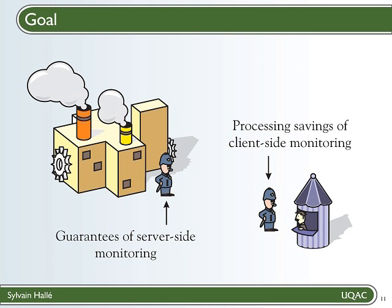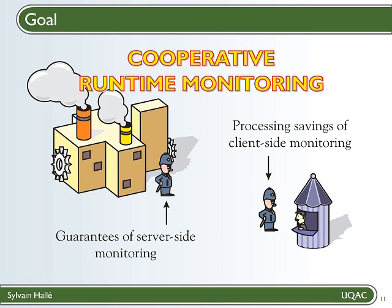That's exactly the reason why we are doing verification in the first place, so this doesn't work either. Now the question is, wouldn't it be nice if we could come up with some method that would give the server the same guarantees than if it did the verification by itself, while also benefiting from the processing savings we get by letting the clients do the job? This is what I call cooperative runtime monitoring.